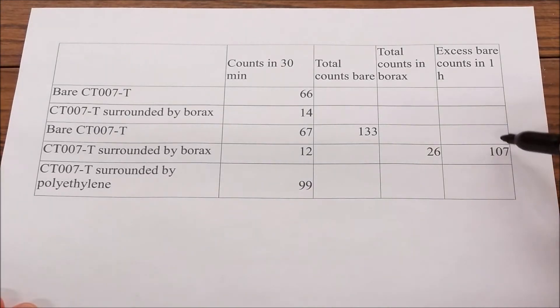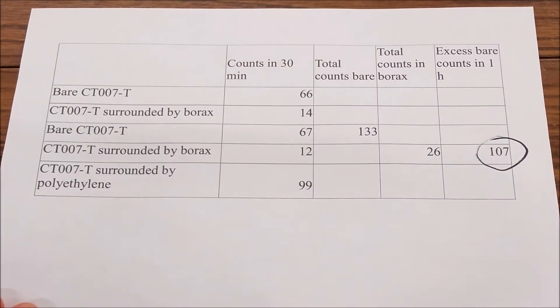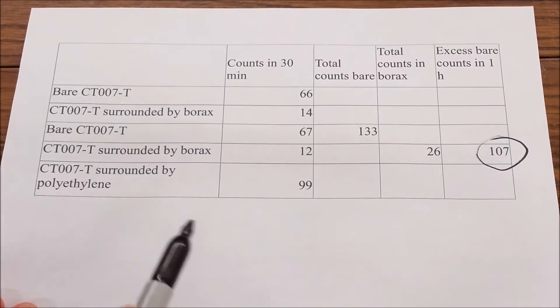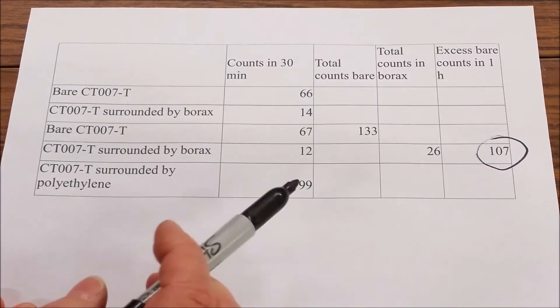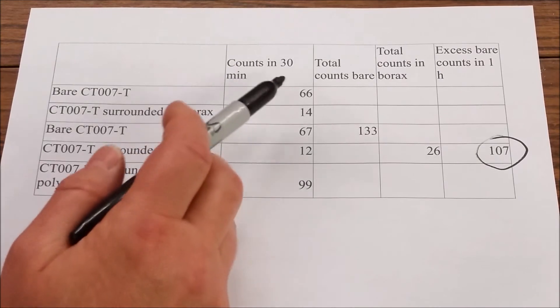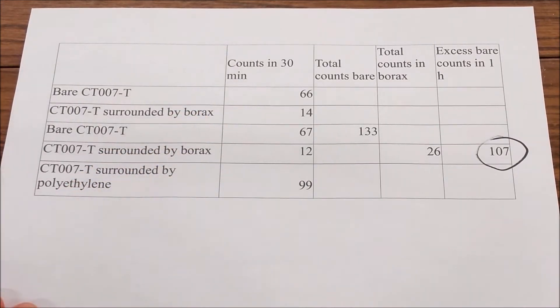We also did a quick experiment. We stuck the neutron detector into a 10 pound box of polyethylene pellets. And what they will do is they will slow down or moderate or thermalize the fast background neutrons. So we expect that to increase our counts because we're counting thermal neutrons. And sure enough, we got 99 counts compared to 66 and 67 counts in 30 minutes. So we saw about a 50% increase.